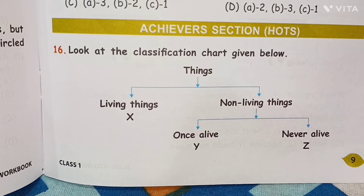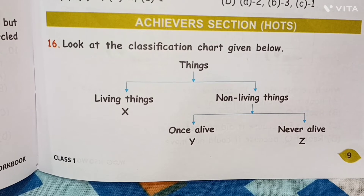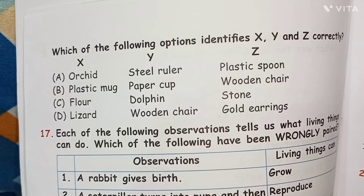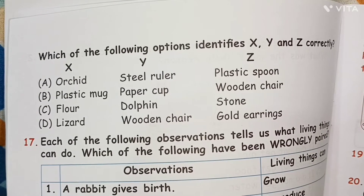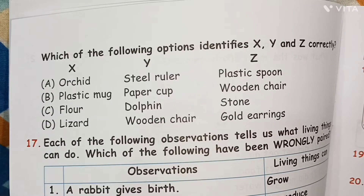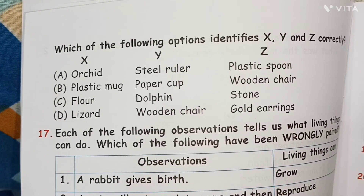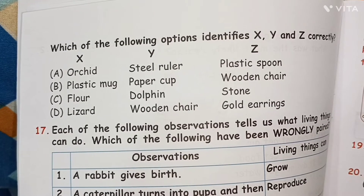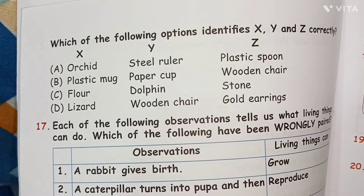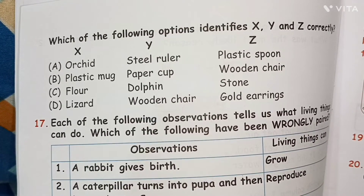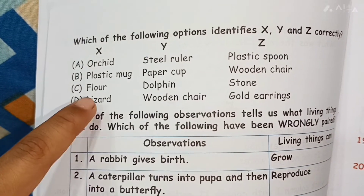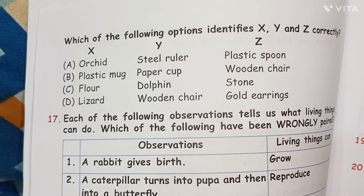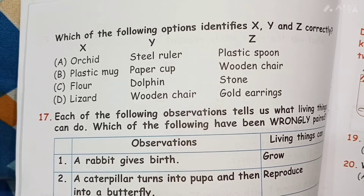Question 16: In a classification chart — things → living / non-living. Non-living splits into X (once alive) and Y (never alive), with Z for living things. Options: D — lizard, wooden chair, gold earrings. Lizard is a living thing; wooden chair was once alive because wood comes from trees; gold earrings are never alive. Answer is D.